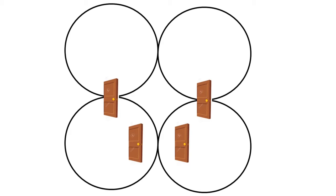Next we're going to draw a balloon. This is not difficult — all you're going to do is draw another circle, but I'm going to add a knot or a tie to the balloon just so we know it's a balloon and not just a plain circle. And lastly, the last shape I want you to practice drawing is a candy cane. The candy cane has a shorter portion that goes up, then it arches around, and then the longer portion comes down. This is our candy cane.